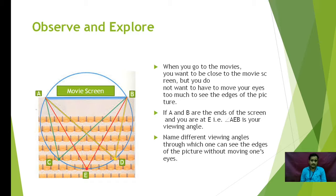Viewing angle is from where you can view the movie screen without moving too much of your eyes. Look at this image carefully and name different viewing angles through which you can see the edges of the pictures without moving your eyes. The answer is angle ACB, angle ADB. Very good.